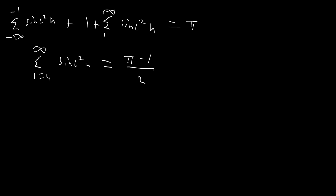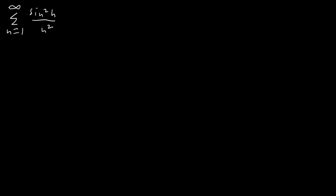Now we can replace our sinc notation. The reason I was using sinc is that sin(n)/n is undefined when n equals zero, but with sinc that value is defined to be one. Now we can use our normal notation and start evaluating this sum. We're going to use trig identities to reorganize: bringing out a one-half, the sum from n equals one to infinity of (1 − cos(2n)) all over n². That's just our basic double angle or power reduction identity.